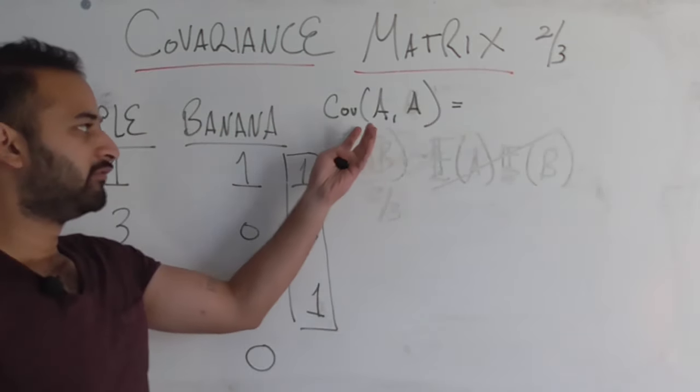The last piece is the variance of the banana variable. Using the same formula, since E[B] = 0, the second term drops out and we only need E[B²]. Computing B²: 1² = 1, 0² = 0, (-1)² = 1. The expected value is (1 + 0 + 1) / 3 = 2/3. So the variance of banana is 2/3.